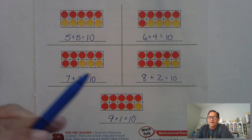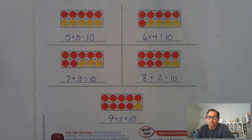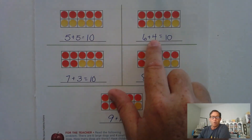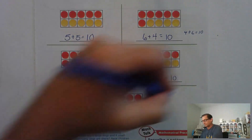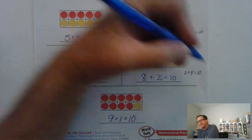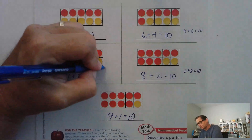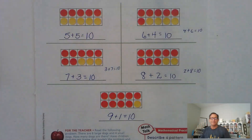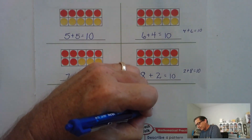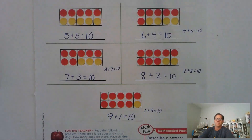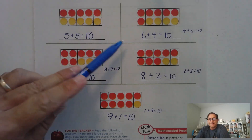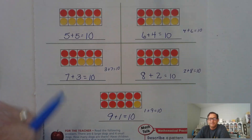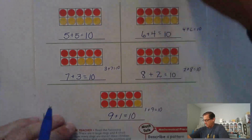So these are the math facts that make tens, right? And we can turn them around: four plus six is 10, two plus eight is 10, three plus seven is 10, and one plus nine is 10. So if we can remember the math facts that help us make tens, it will make adding different numbers easier. Let's look at page 130.